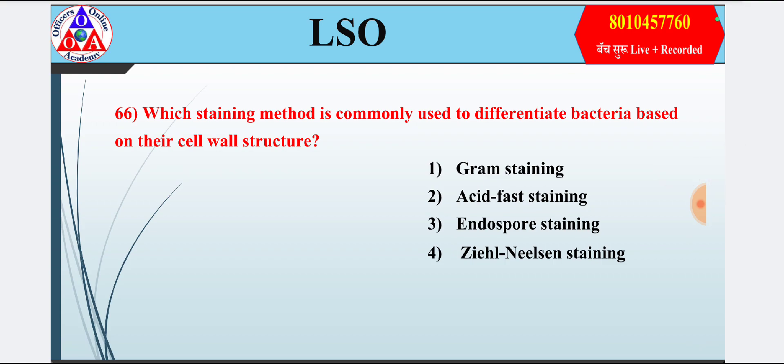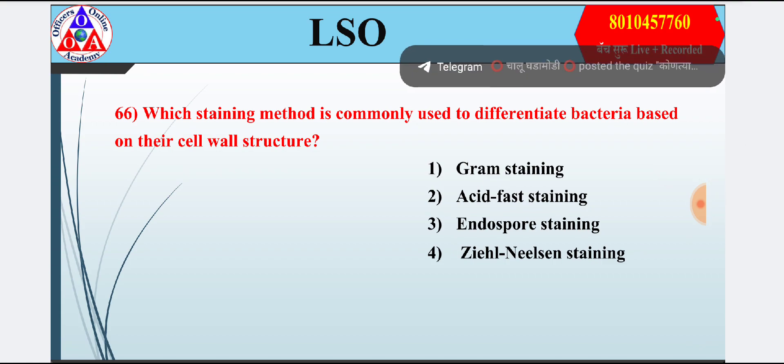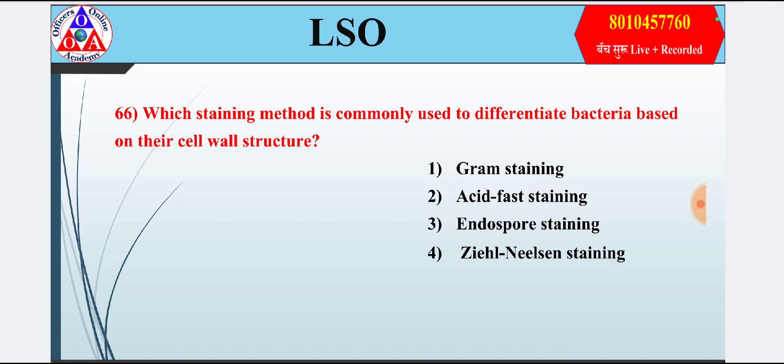Question 6: Which staining method is commonly used to differentiate bacteria based on their cell wall structure? Option 1: Gram staining; option 2: acid-fast staining; option 3: endospore staining; option 4: Ziehl-Neelsen staining. Answer is option 1 — Gram staining.